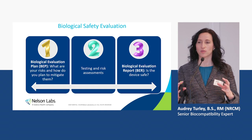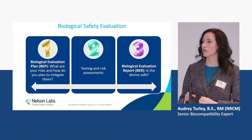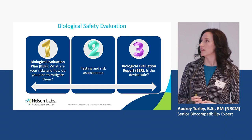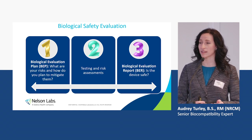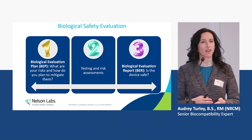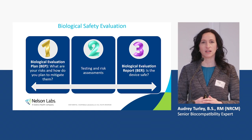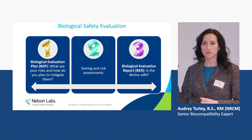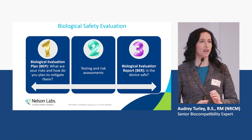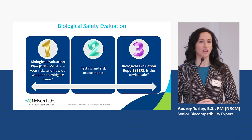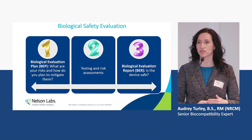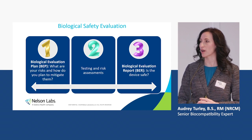When I read 10993 Part 1, I see biocompatibility as a three-phase approach. The first phase is an initial risk assessment — at Nelson Laboratories we call that a Biological Evaluation Plan, or BEP. The second phase is carrying out the testing and risk assessments outlined in the BEP. The third phase is summarizing what happened in phase two. 10993-1 Clause 7 specifically requires a Biological Evaluation Report, stating that results shall be evaluated by a person with appropriate education and experience.